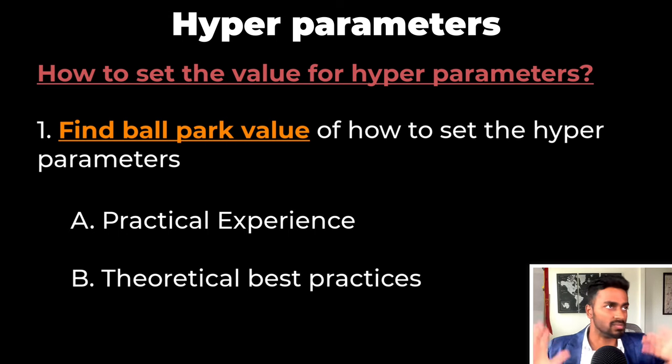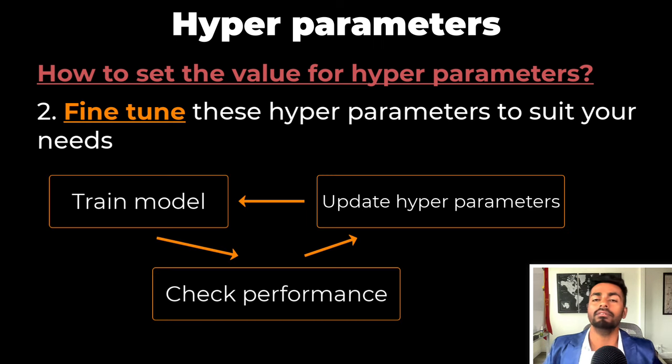Once you have this ballpark starting point estimate for a hyperparameter, you can then manually set these hyperparameters, which involves starting with some value, training the model, see the performance, and then manually change the hyperparameter, train the model, see the performance until you are satisfied.